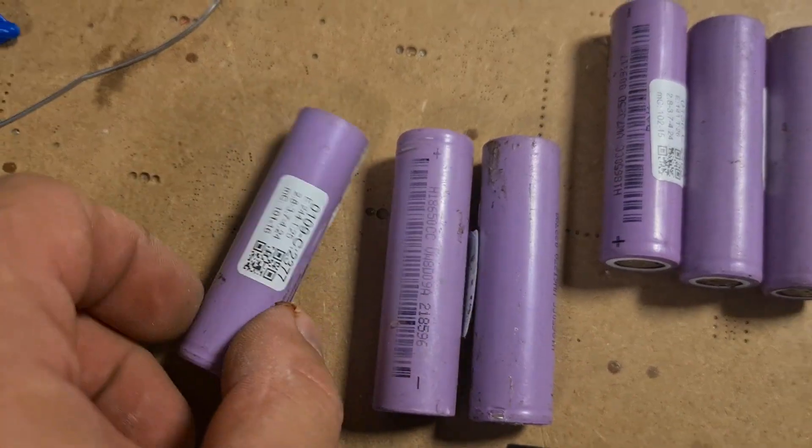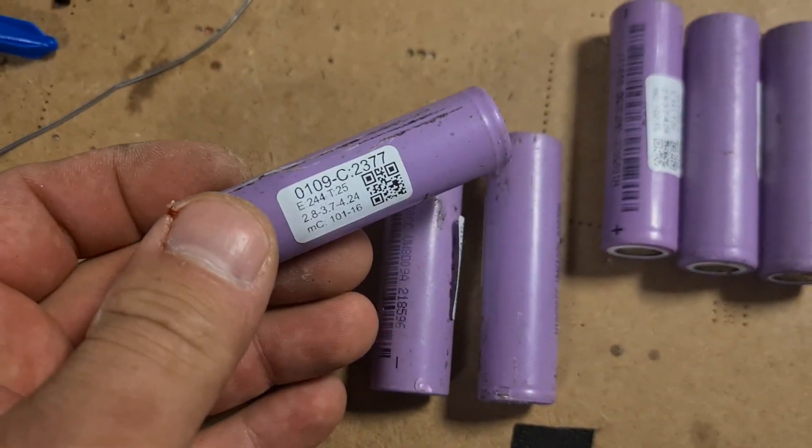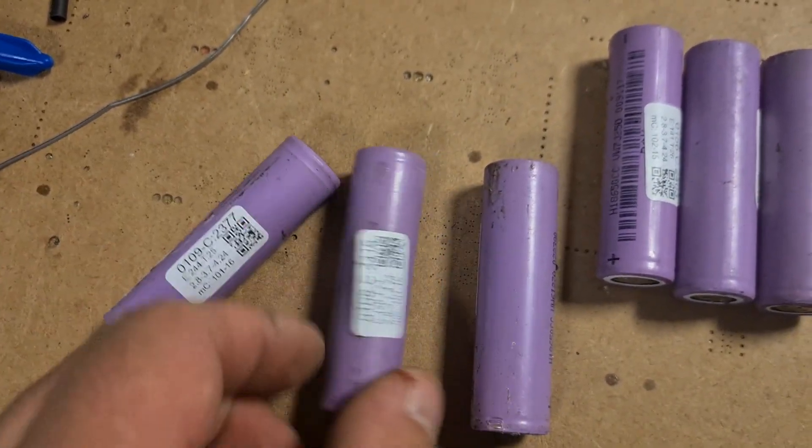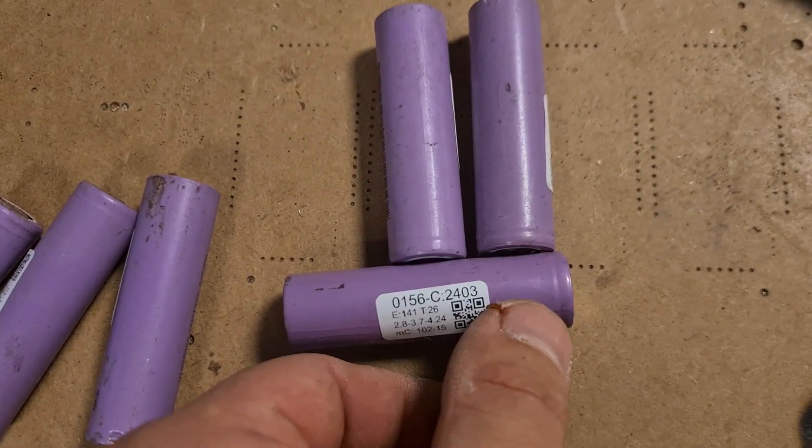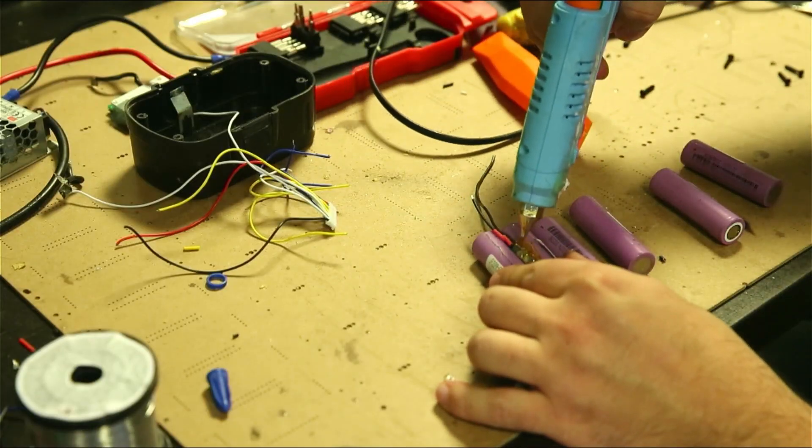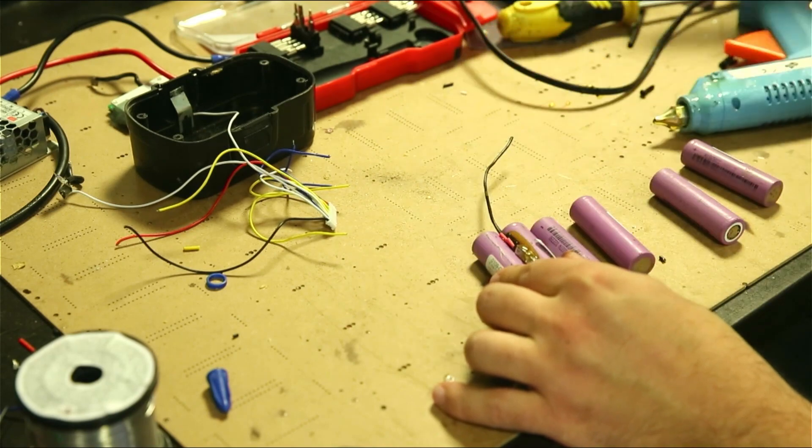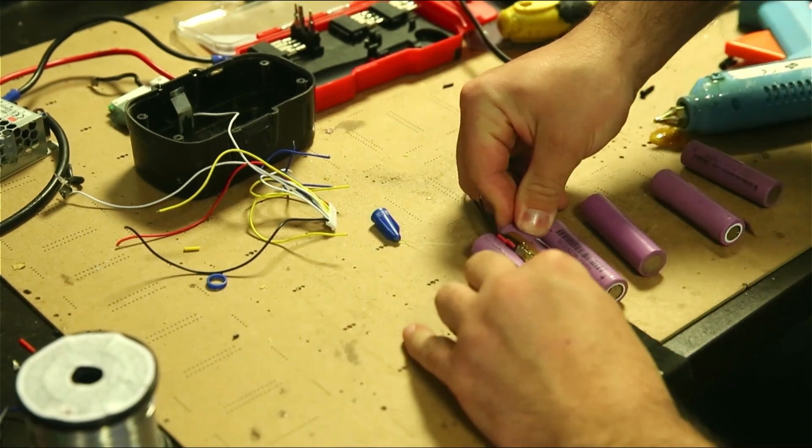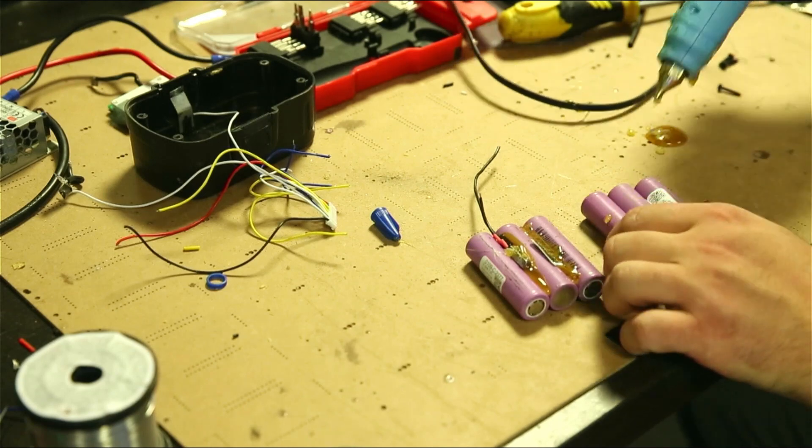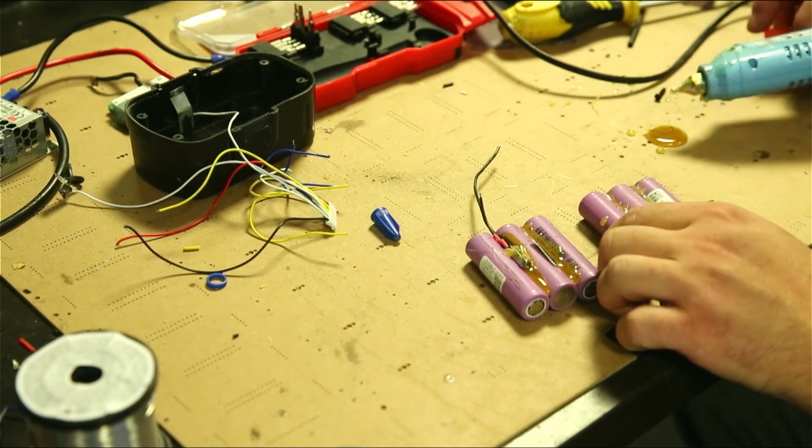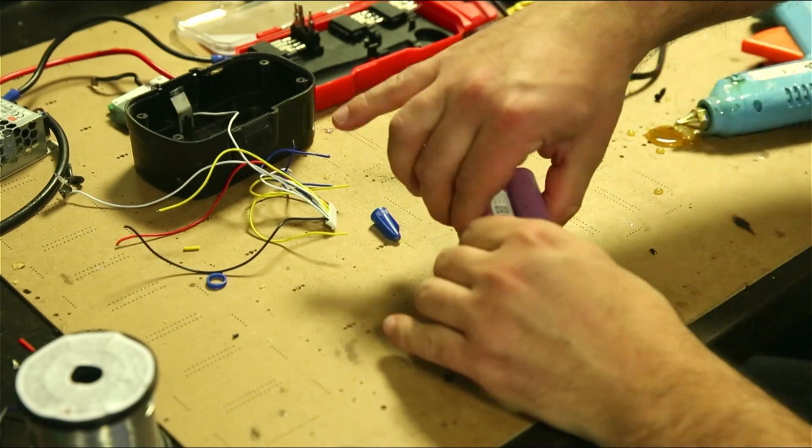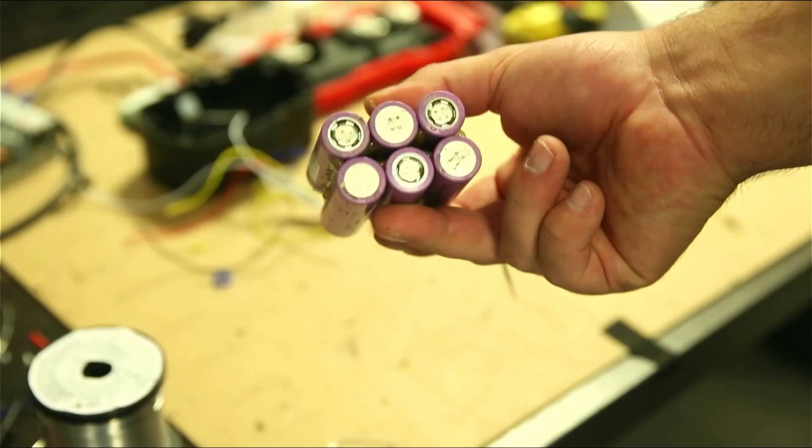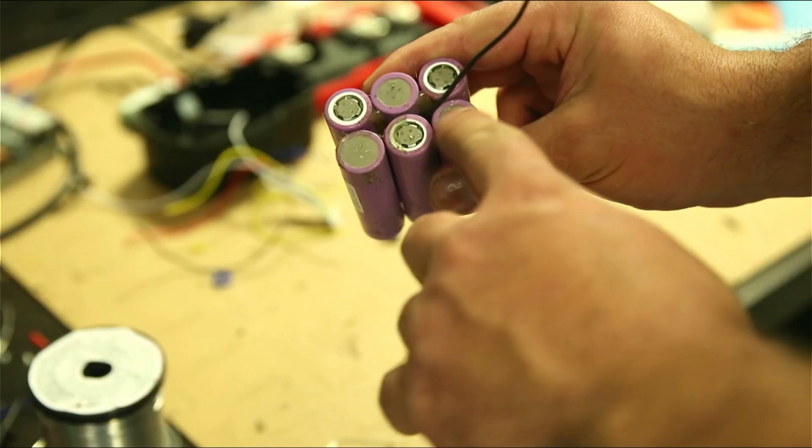I'm using cells recycled from e-scooter packs. They have been tested using the mega cell charger and they are roughly the same capacity. This is how I arrange the cells. Now it's time to weld them.